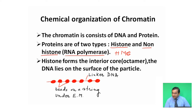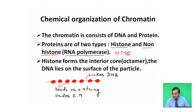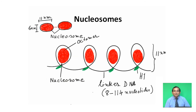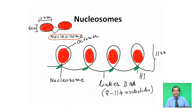When chromatin is viewed under an electron microscope, it appears as beads on a string. These beads are ellipsoidal structures termed nucleosomes, which are the unit of chromatin material. The diameter of a nucleosome is 11 nanometers and its height is 6 nanometers.